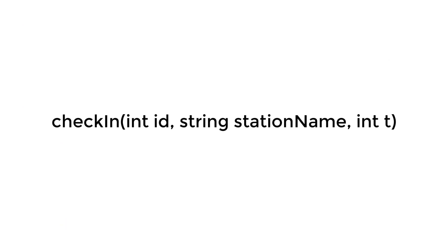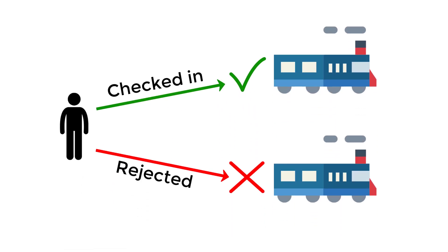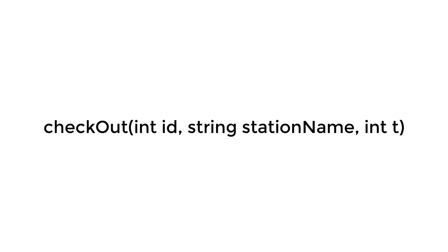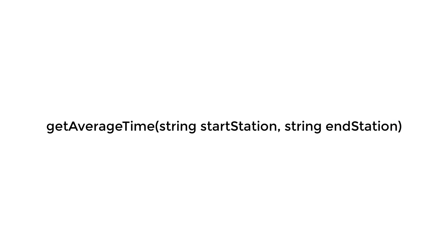Starting off with checking in, we are given the following method signature. The ID is a unique identifier for our customer, and we must check the customer into the station name at time T. Each customer can only be checked into a station one place at a time. Checking out has the same method signature, where station name in our checkout function is the final destination at an end time of T. Our last function, get average time, needs to get the average time to travel between two stations, computed for all previous travel between any two stations.